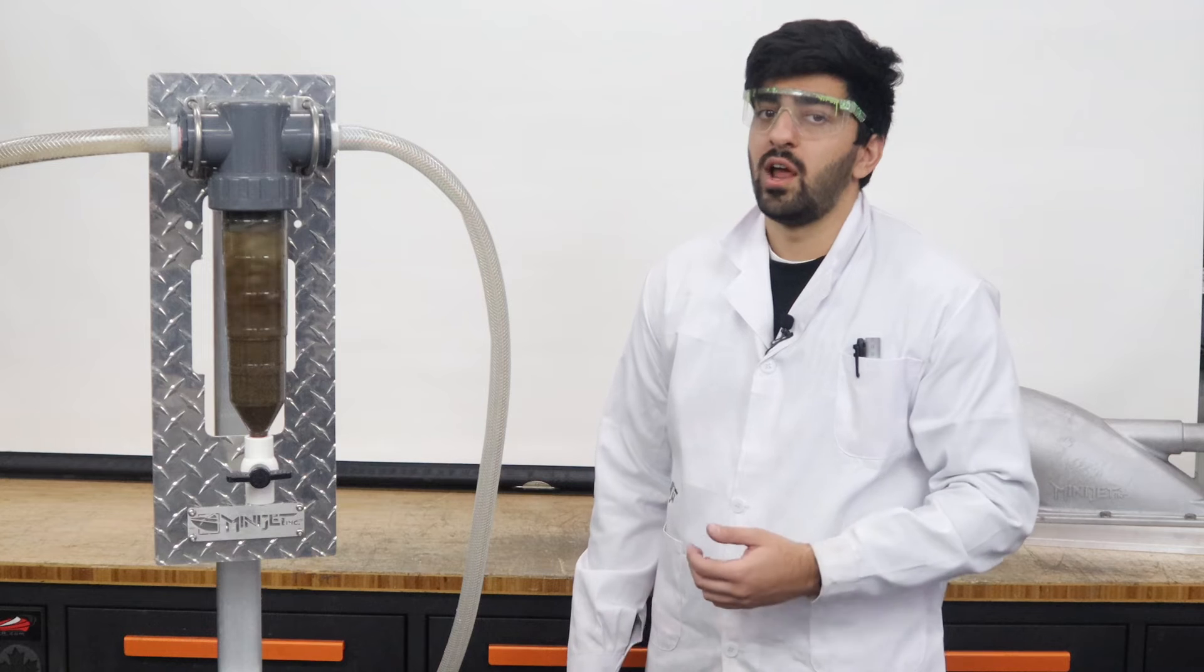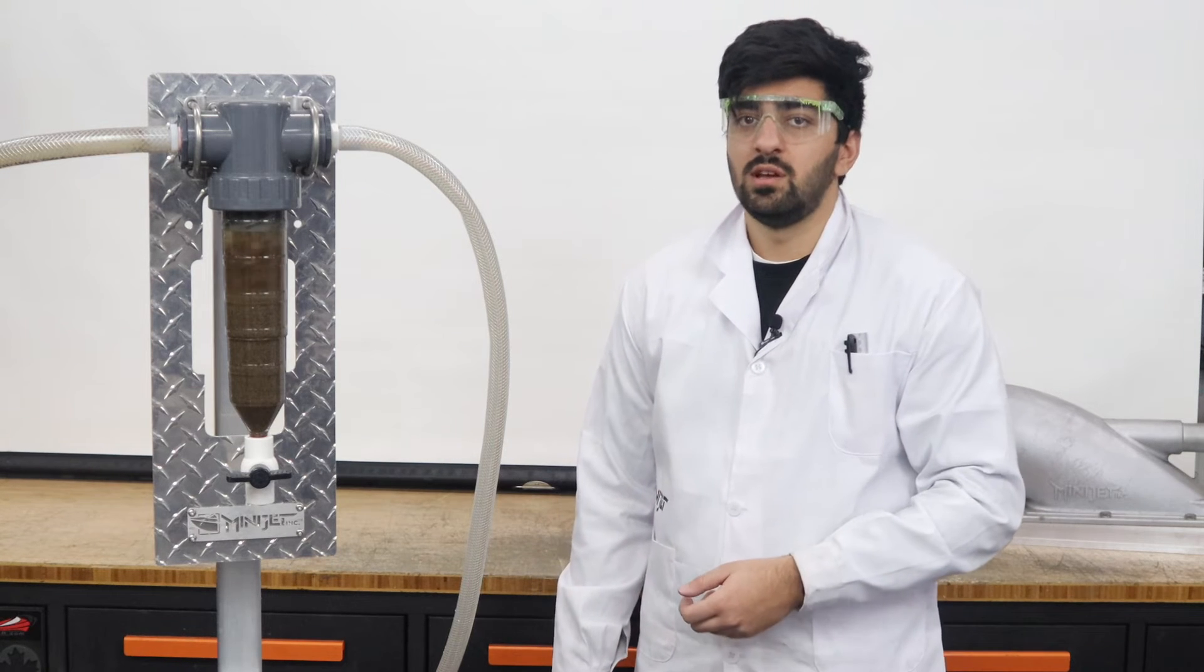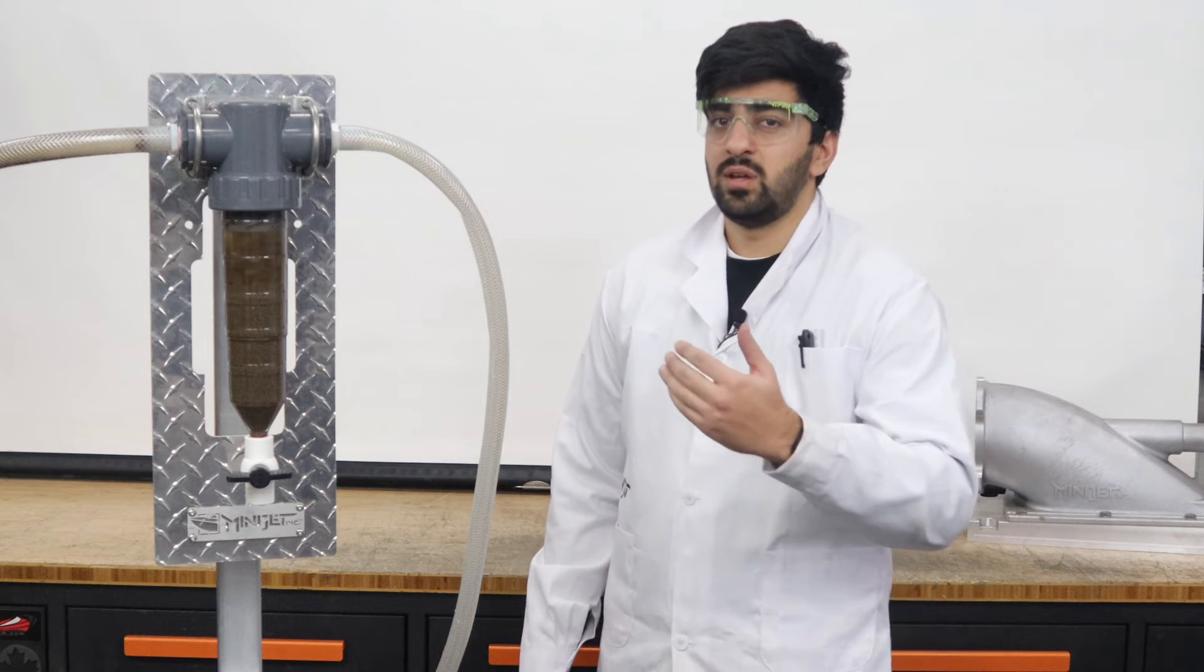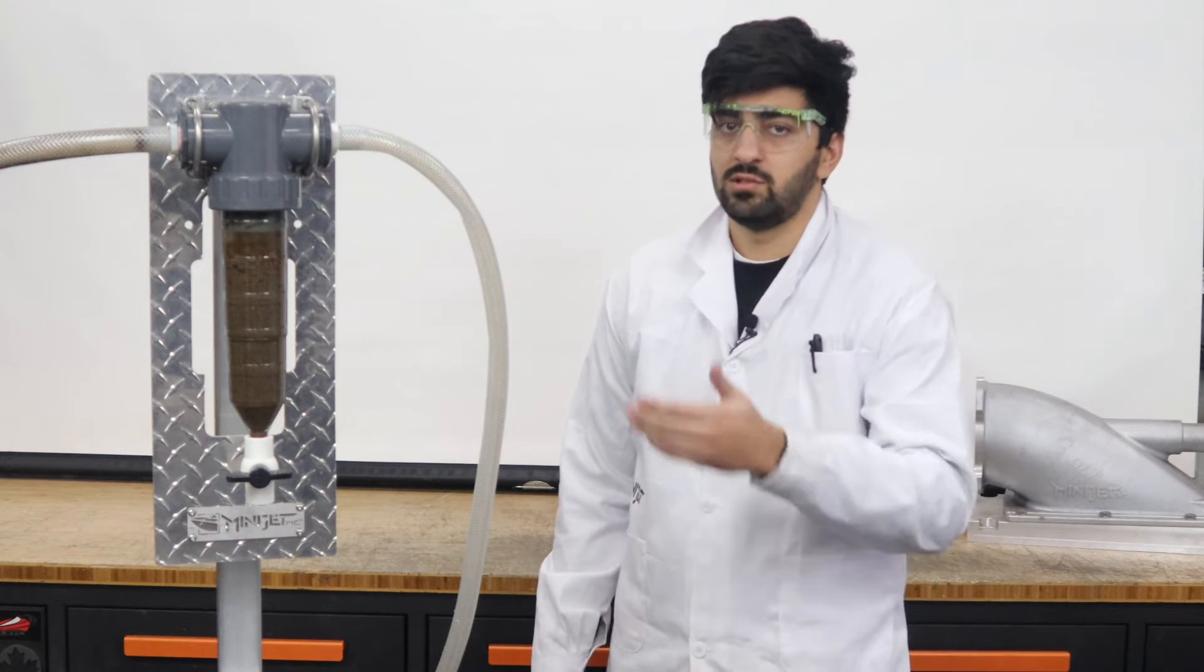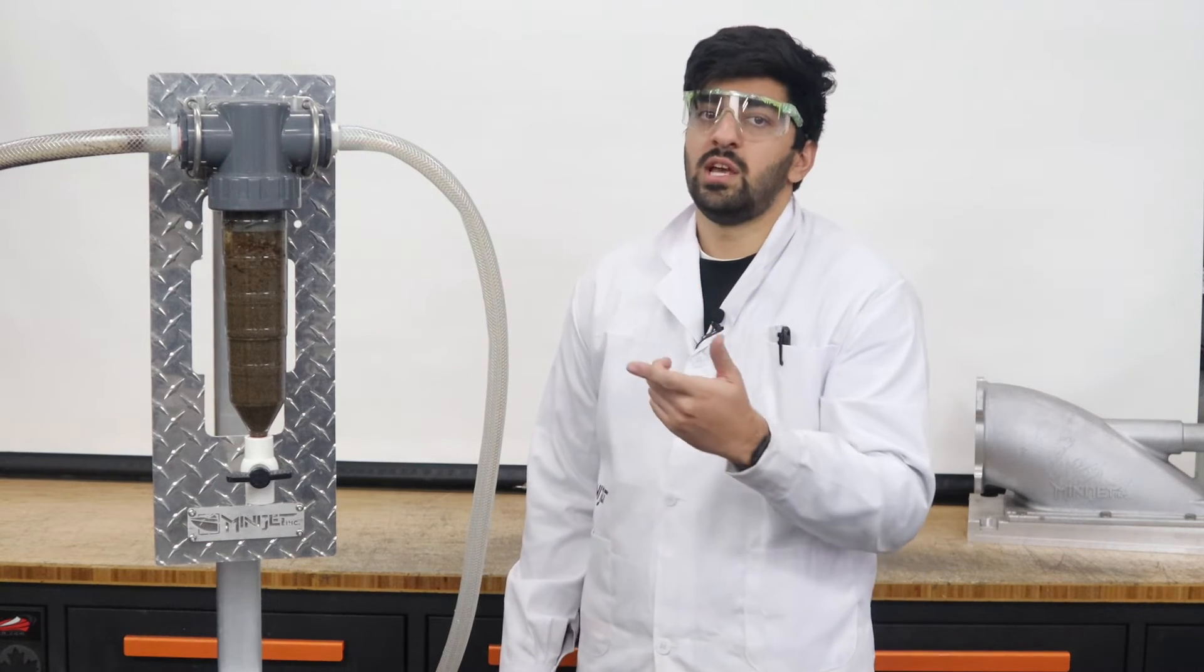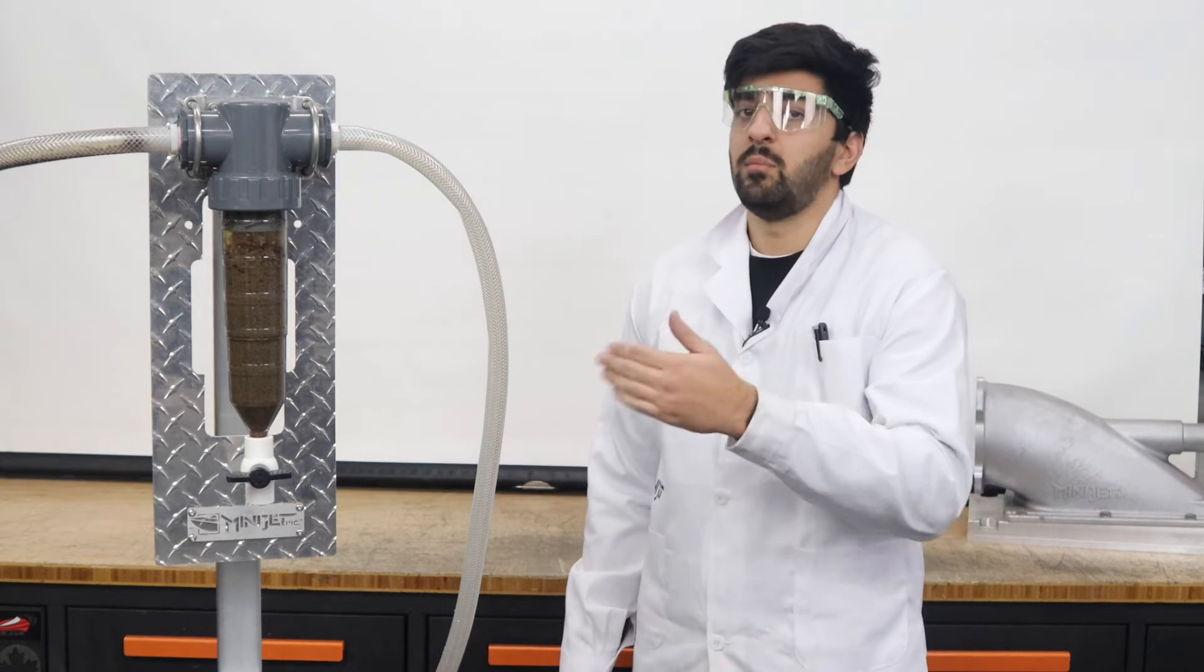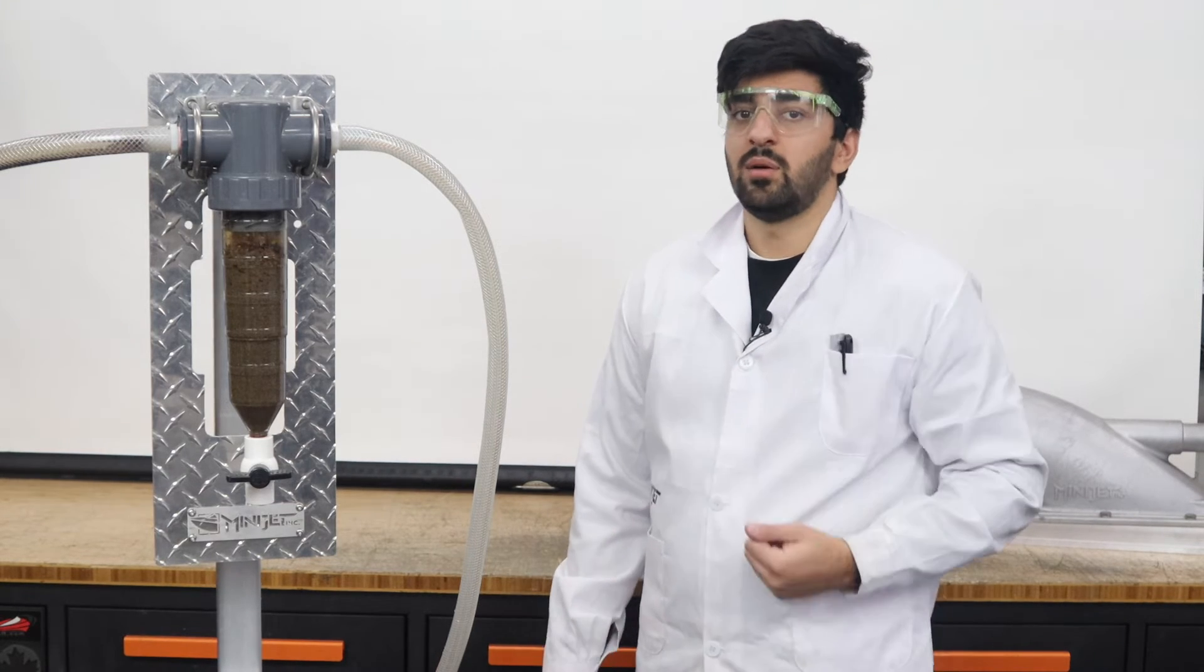Now as the Mini Jet sand trap starts to reach its maximum capacity, we can also see that the filter element becomes blocked and that the flow of water through the trap has dropped significantly. Now debris has backed up in the supply line running to the sand trap, but importantly the debris is not flowing through the outlet, and that means it's staying out of our engine. So let's stop this test, we'll empty out the sand in the trap and see what's ended up in the final buckets.